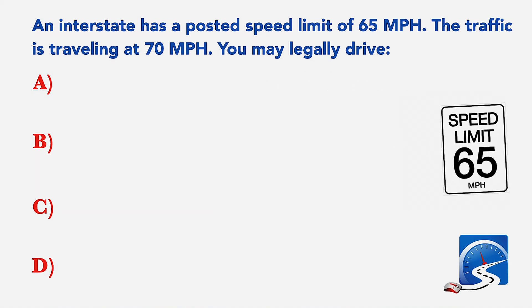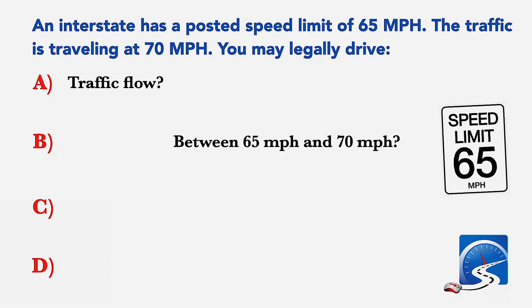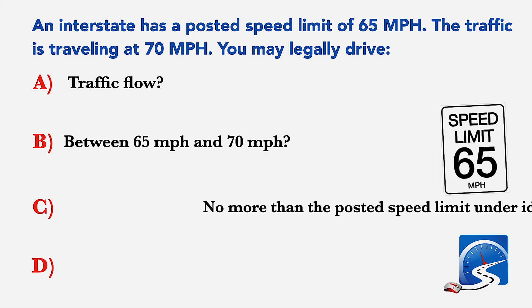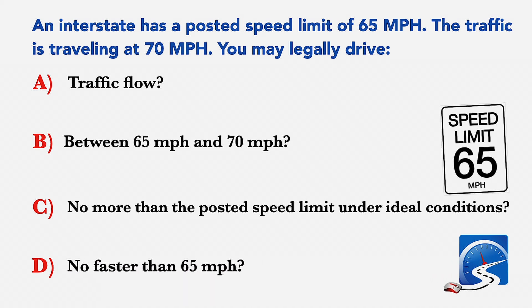An interstate has a posted speed limit of 65 miles per hour. The traffic is traveling at 70 miles per hour. You may legally drive: A: The speed of the traffic flow, between 65 and 70 miles per hour. B: No more than the posted speed limit under ideal conditions. C: No faster than 65 miles per hour. Correct answer C: No more than the posted speed limit under ideal conditions.